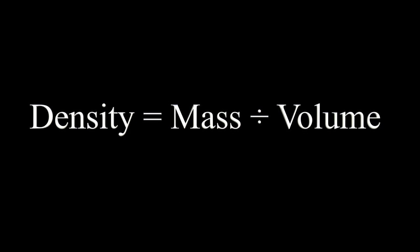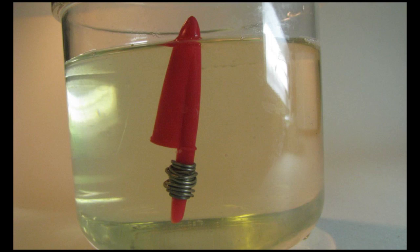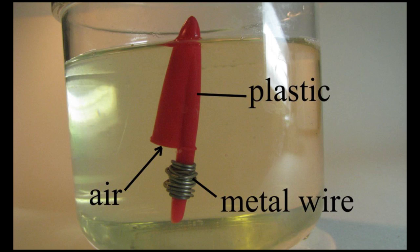When the diver is floating, its density is less than that of water. The total volume of the diver is made up of the plastic cap, the wire, and the air bubble. Its mass is the total mass of these same three items.